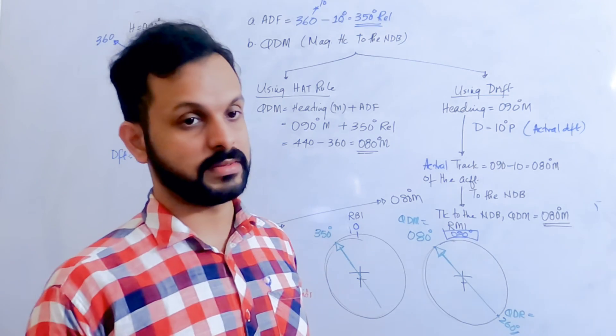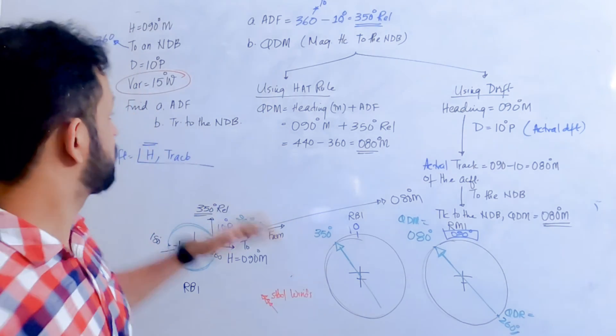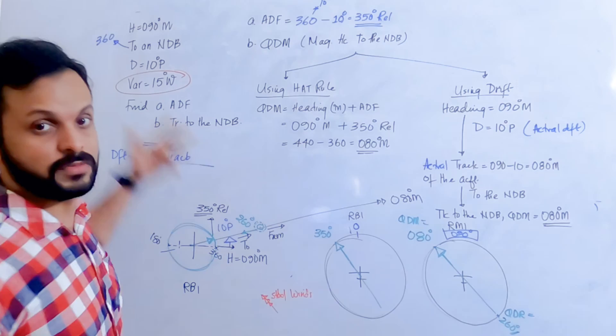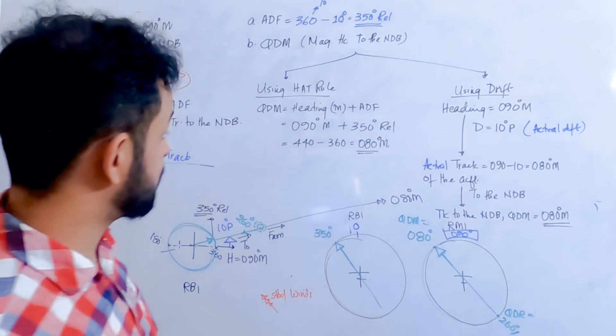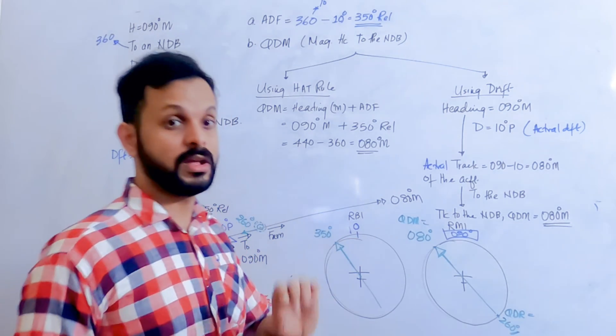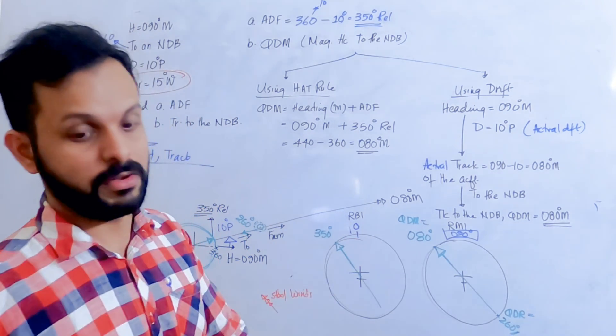This is a very important understanding. There is nothing different from the previous question — an additional variation is given which is of no use here. Remember: if you want to find QUJ, you would need the variation, but it should be the variation at the aircraft.